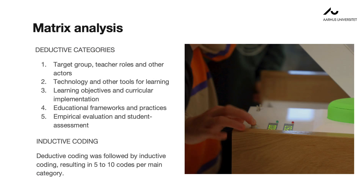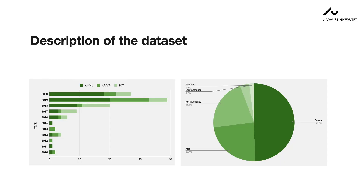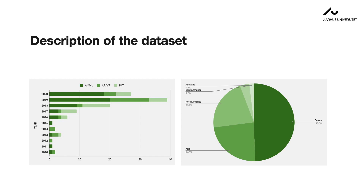Additional columns were created for the deductively analyzed categories. Looking at the results, the vast majority of records included for the review were published in the last three years. Less diversity was found in geographical distribution of the institutions of first authors, showing a clear over-representation of Western countries. The most common target group for learning activities for immersion technologies are students in secondary education, in particular grades between 8 and 10.